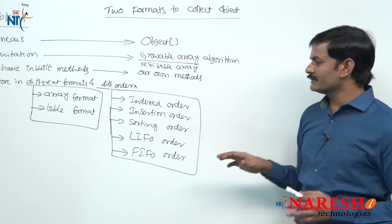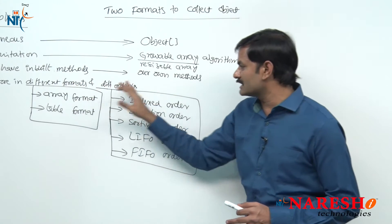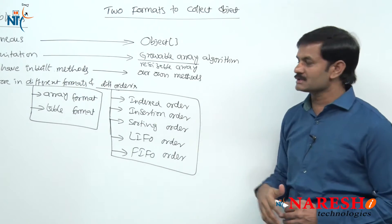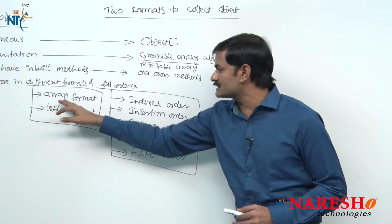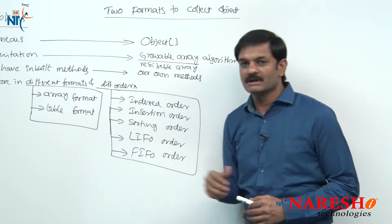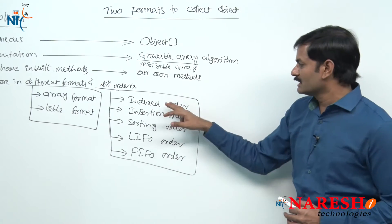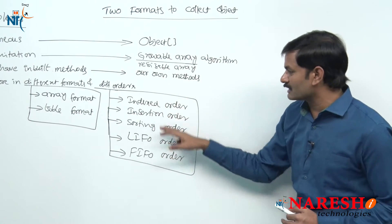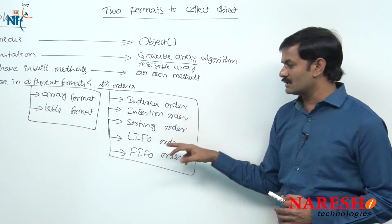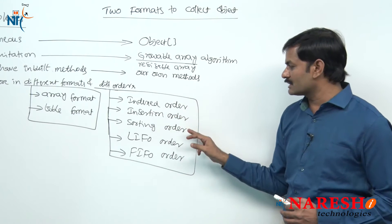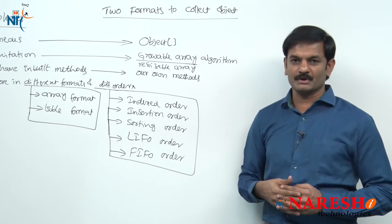Totally, for the 4th problem of different formats and different orders: we have 2 different formats — array format and table format — and 5 different orders: indexed-based order, insertion order, sorting order, LIFO order, and FIFO order.